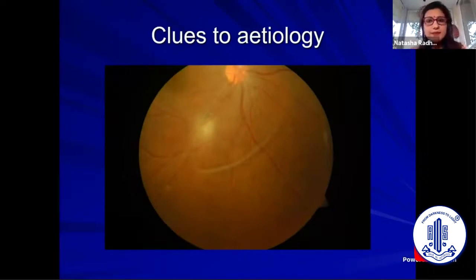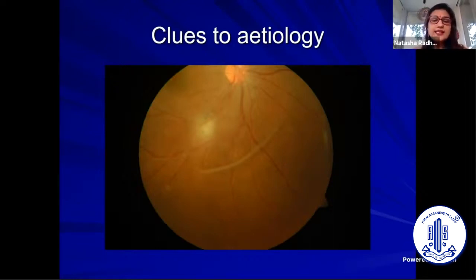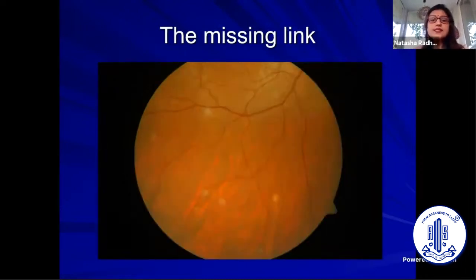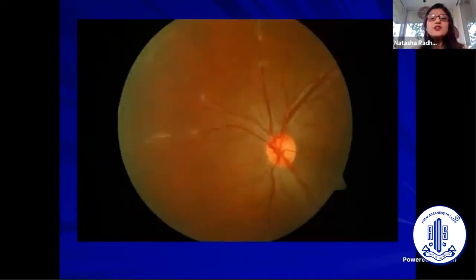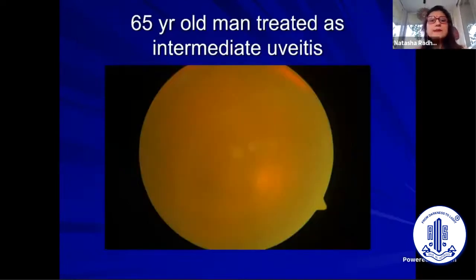The posterior segment examination also gives you evidence and clues to the etiology. If there is a lesion close to a scar, it is probably toxoplasmosis. It might give you the missing link in your diagnosis — as in one case where a small tubercle gave us the clue that it was probably of tubercular etiology. You may also get periphlebitis — a candle-wax periphlebitis that is very classical of sarcoidosis.